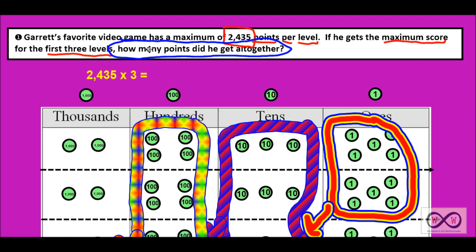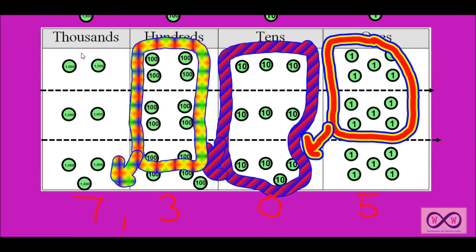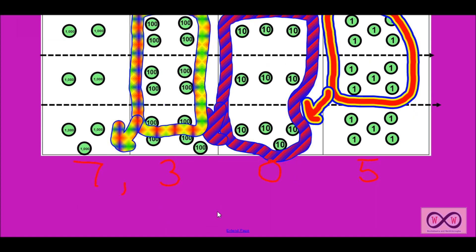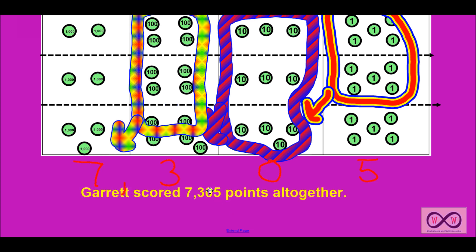Let's go back to our math job and make sure we've actually solved this problem. How many points did he get altogether? We used our factors of 2,435 and three and came up with a product of 7,305. So we've shown our work with numbers, pictures, and now we need to show our answer with words. If you had something like: Garrett scored 7,305 points altogether — you'd be absolutely correct. Let's move on to the next problem.